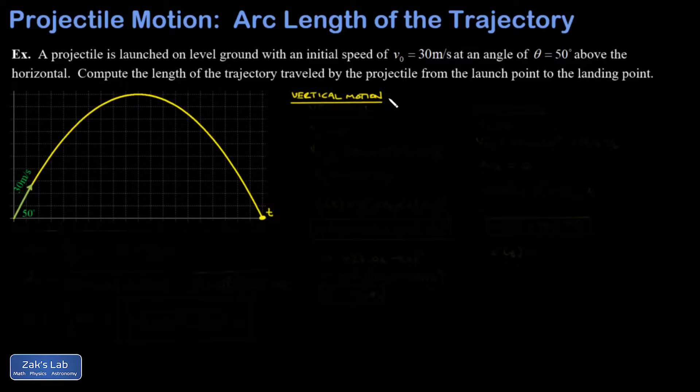Starting out with the vertical analysis, I have that the initial y value is zero. The initial y velocity will be 30 sine of 50 degrees, and that comes out to 23.0 meters per second. The acceleration in the y direction is just negative g or negative 9.8 meters per second squared.